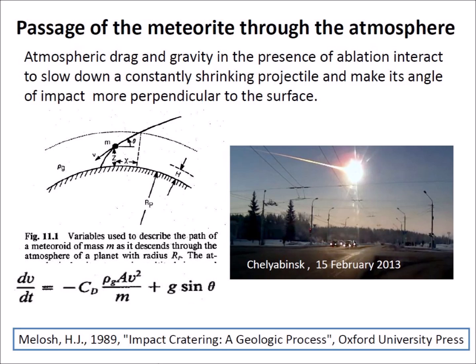A trajectory tangential to the Earth's surface would take a meteorite approximately 1,100 kilometers through the atmosphere. This distance would be traversed in 65 seconds by an asteroid with a speed of 17 kilometers per second, and a comet with a speed of 50 kilometers per second would cover the same distance in 22 seconds.